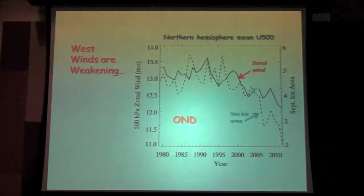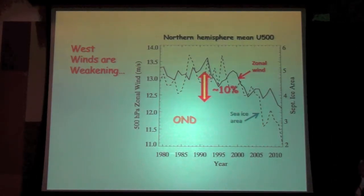This is something that we can actually measure and that's what I'm showing you here. Starting back in the late 1970s, this black line here is showing you the speed of the west to east winds about halfway up through the atmosphere and how it's changed over this time period in the fall. What you see is it's decreased by about ten percent. Also plotted on here is what's been happening with the sea ice. You can see that the winds start to really decrease right when the sea ice really started to decline.